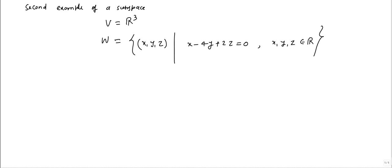Now, let us discuss another example of a subspace. Suppose the given vector space is R3. We know that R3 is a vector space over R, and we let W be a subset having coordinates x, y, z with the condition x minus 4y plus 2z is equal to 0, where x, y, z are taken from R. We need to check if W follows the three criteria to determine whether W is a subspace or not.